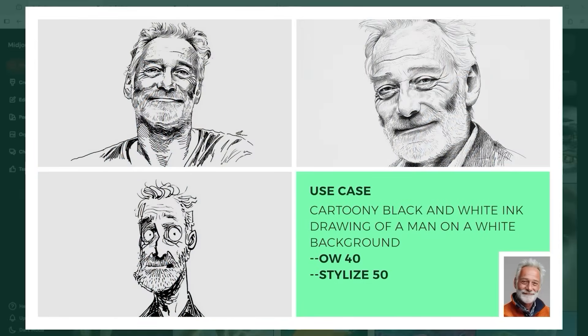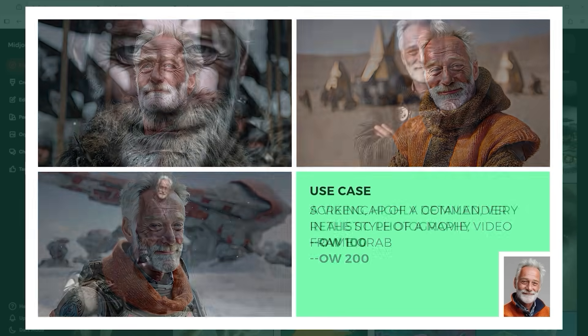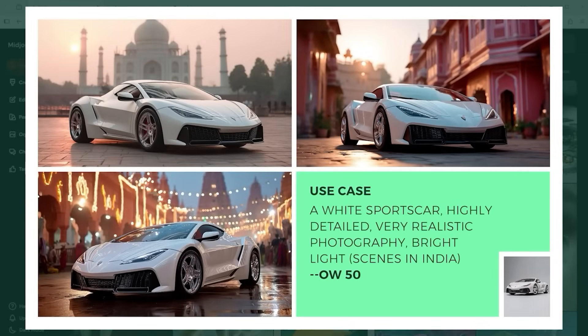Here you can see how it works with a black and white line drawing. Of course, you can also draw inspiration from movies — just use the prompt 'video frame grab' in the style of a specific film. How about trying it with a Viking? Here's the result. It doesn't matter if you want an extreme close-up, a medium shot, or a full body shot — it all works perfectly fine. And remember, Omni Reference isn't only about people; you can also use it with objects, like in this example with a sports car.